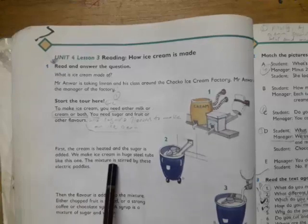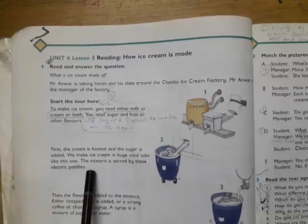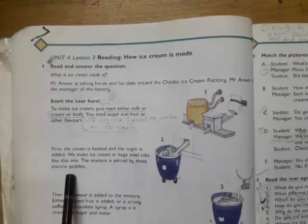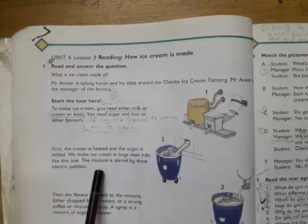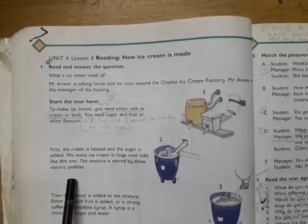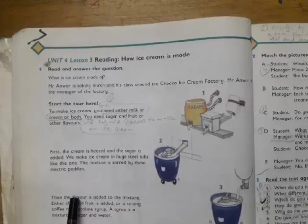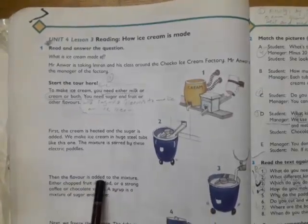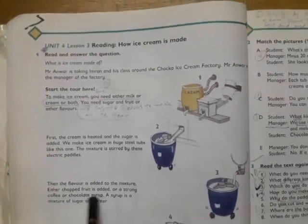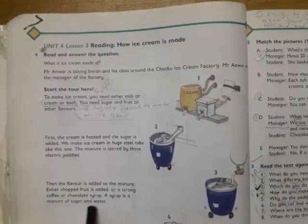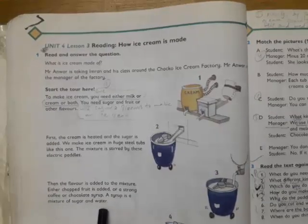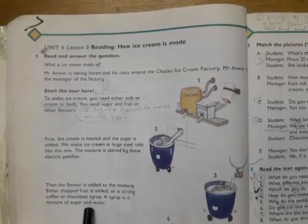Then the cream is heated and the sugar is added, and all the time the mixture is stirred by the paddles. Then the flavor is added to the mixture. Either chopped fruit is added or a strong coffee or chocolate syrup. Syrup is a mixture of sugar and water. In the next step we add the flavors like fruit flavors, ice cream, or coffee.